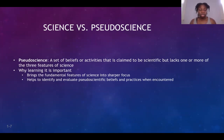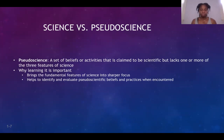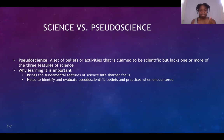The next part of the chapter is science versus pseudoscience. Pseudoscience refers to activities and beliefs that are claimed to be scientific and may appear to be science at first glance — but they're not. Your book defines pseudoscience as a set of beliefs or activities that is claimed to be scientific but lacks one or more of the three features of science that we just went over.